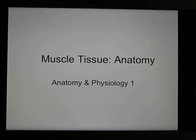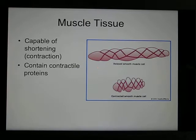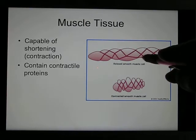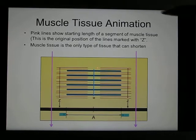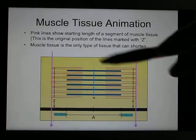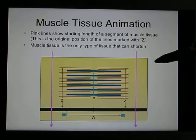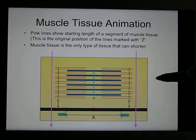We're in the muscular system. The muscle tissues are able to contract, so they have contractility — they're able to get shorter. These slides represent the structure of the muscle at the molecular level.